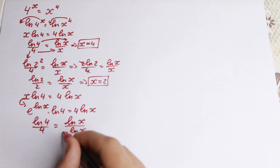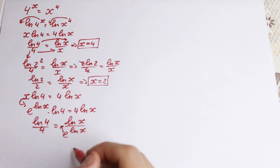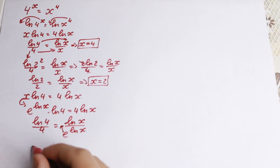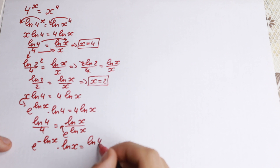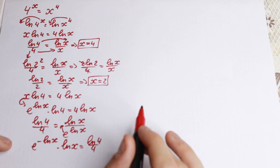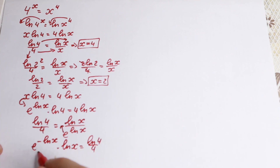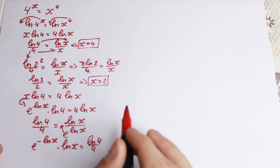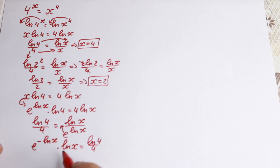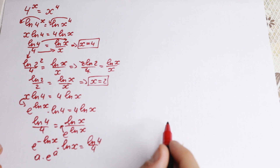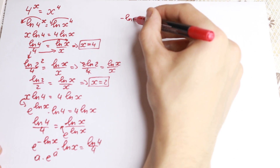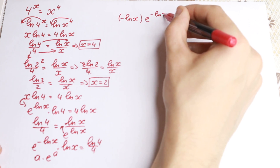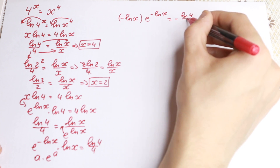I want to bring the e term from the denominator to the numerator, putting a minus sign: e^(−ln(x)) · ln(x) = ln(4)/4. On the right-hand side this is a constant. But the left side is not quite in Lambert W form because we need a times e^a. So we multiply both sides by −1: (−ln(x))·e^(−ln(x)) = −ln(4)/4.